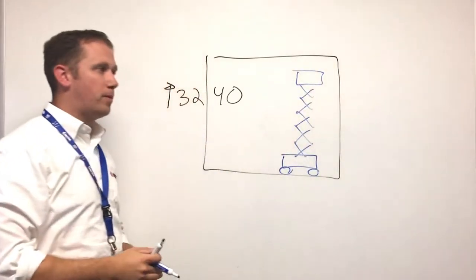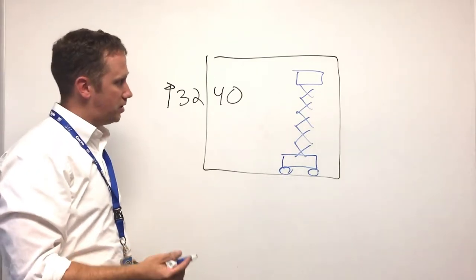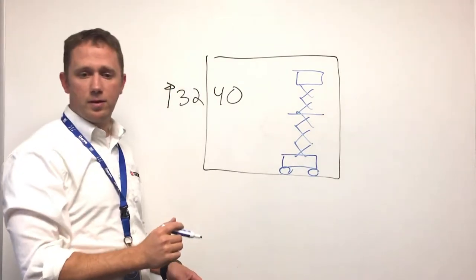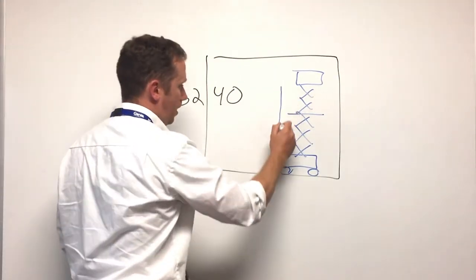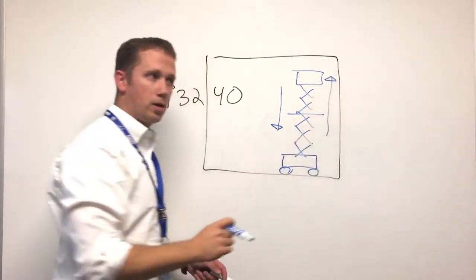Now one of the compromises that some manufacturers made in order to get to the 40 foot height was to limit the drive height to something like 30 feet, meaning the user of the scissor had to come down in order to drive and then re-elevate when they wanted to do work.